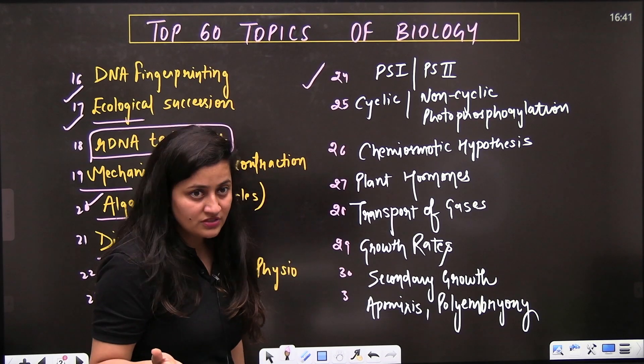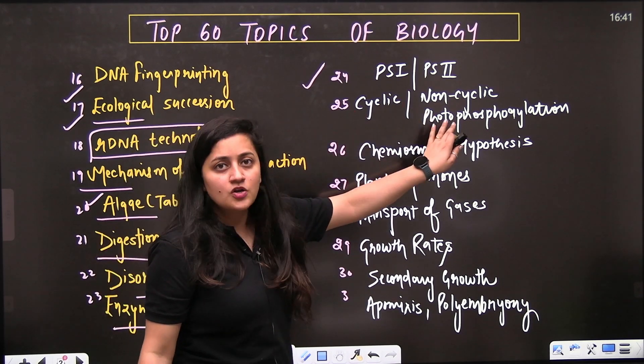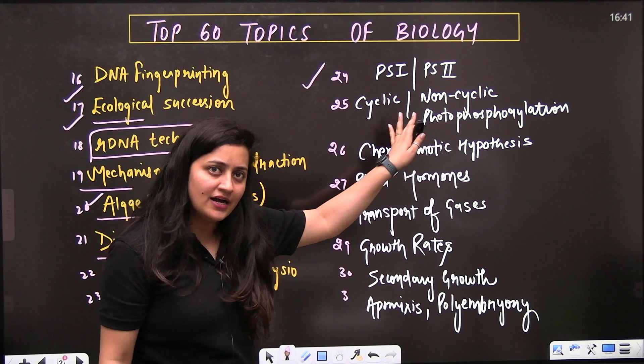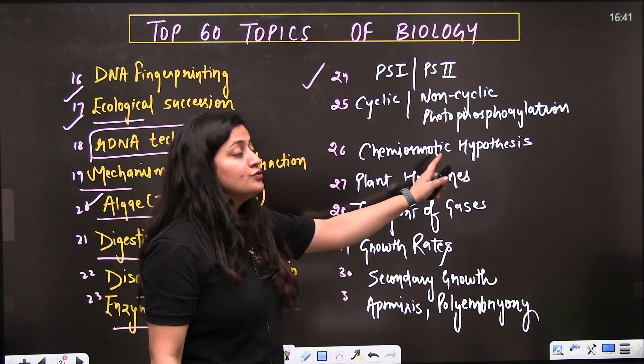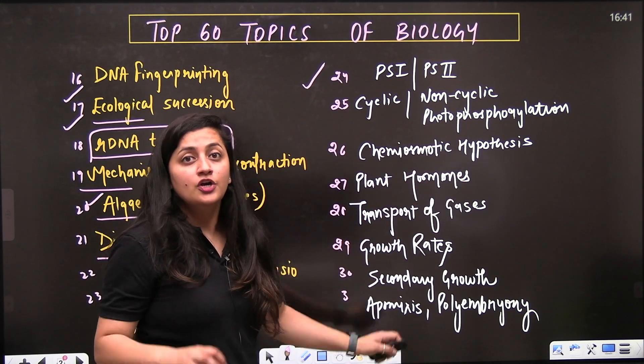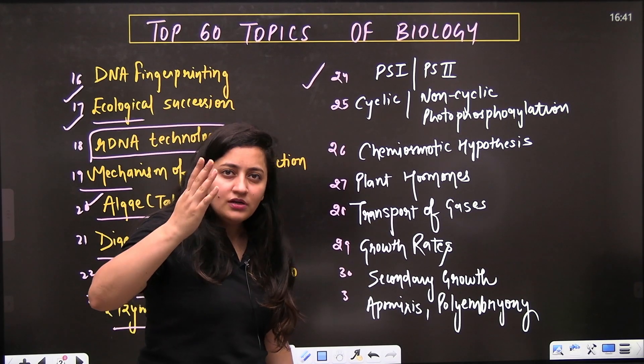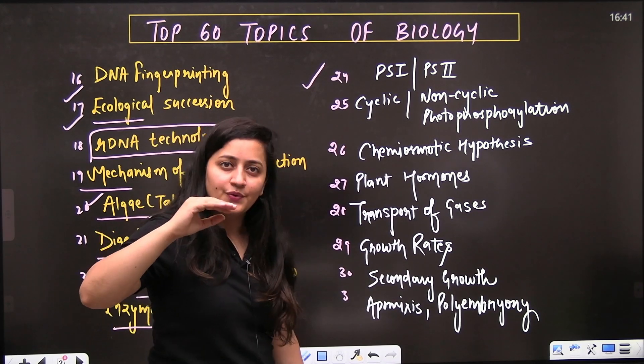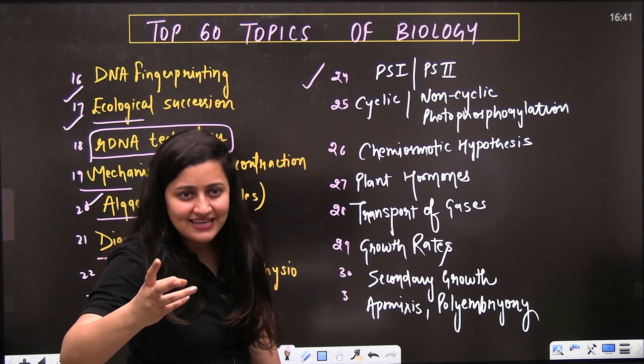Then the differences in photosystem one and photosystem two, the cyclic and non-cyclic photophosphorylation - again from photosynthesis. Chemiosmotic hypothesis is important - you should know about the flow of electrons and about the ATP synthase as well.